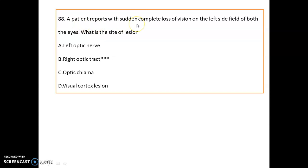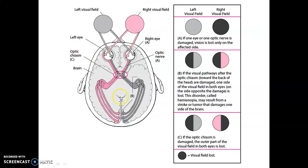A patient reports sudden complete loss of vision on the left side field of both eyes. The site of lesion is the right optic tract. If one eye or one optic nerve is damaged, vision is lost only on the affected side. If the visual pathway after the optic chiasma is damaged, one side of the visual field in both eyes is lost — this is called hemianopia, and may result from a stroke or tumor. If the optic chiasma itself is damaged, the outer part of the visual field in both eyes is lost.